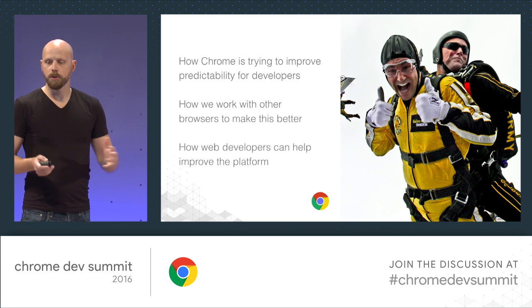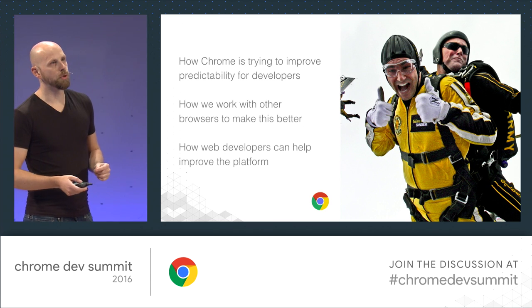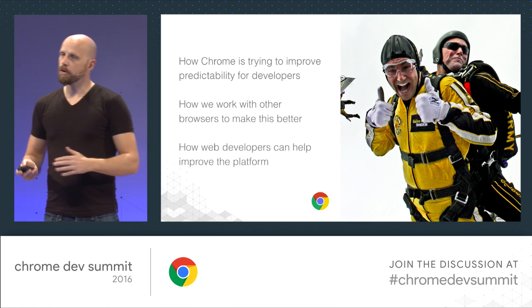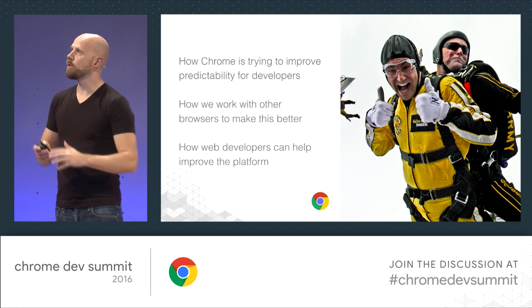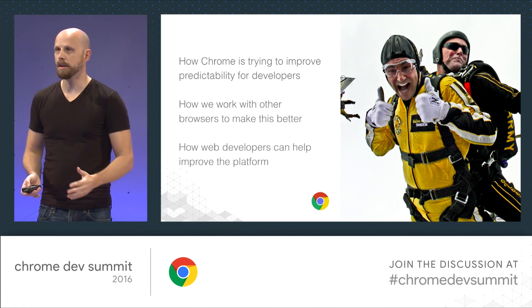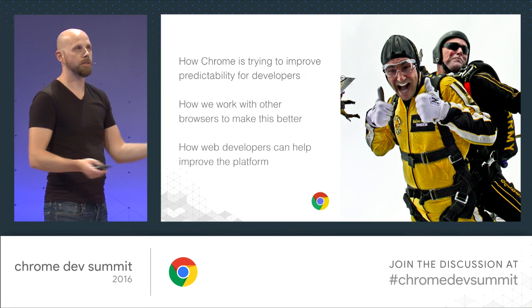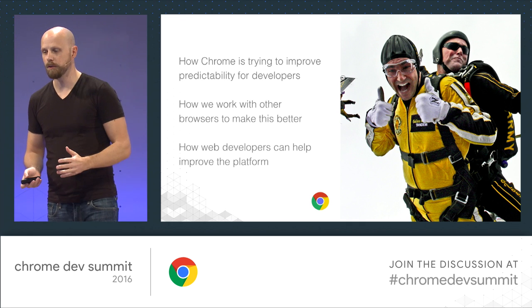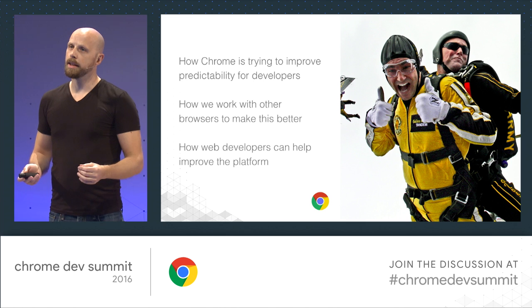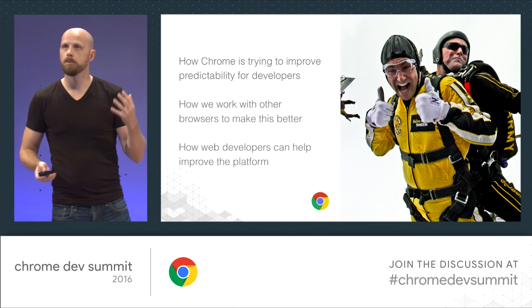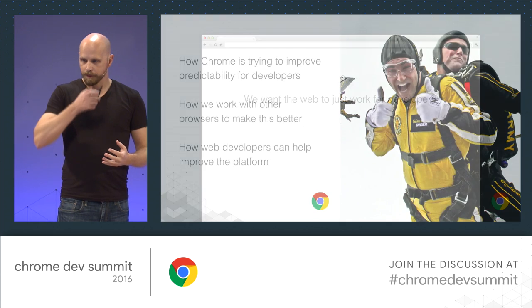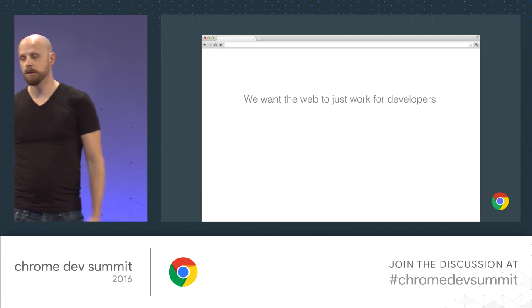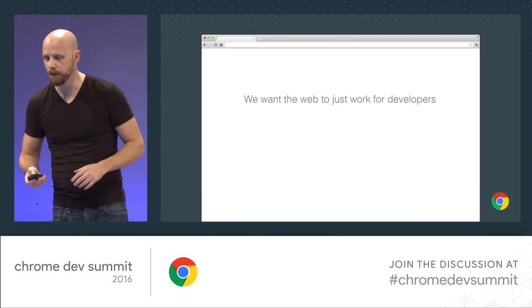The main areas we want to go through today: how Chrome is trying to improve predictability for developers, all the work we're doing to make things more predictable; how we work with other web browsers to make sure it works the same way across the board — this is not just about us, it's about the web; and how web developers can help improve the platform as well. Basically, we want the web to just work for developers.